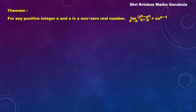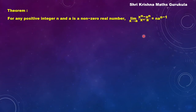Now consider the expression x to the power n minus a to the power n by x minus a. Look at this term — this is a polynomial division. We have a polynomial in the numerator and in the denominator. I will show you the polynomial division of this term in case you don't know.